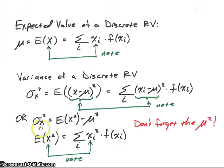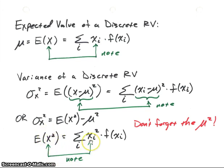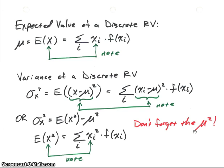So we can use the second equation. Sigma sub x squared is the expected value of x squared minus mu squared. We calculate the expected value of x squared first — summing x sub i squared times the distribution function values — then subtract mu sub x squared. One common error is to calculate that expected value of x squared and then forget to go back and subtract mu squared. It's very easy to forget because you think you're at the end.